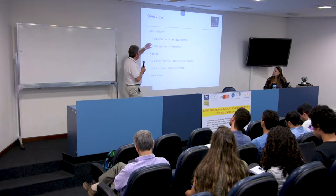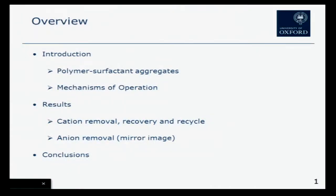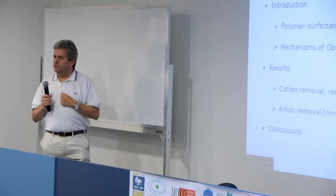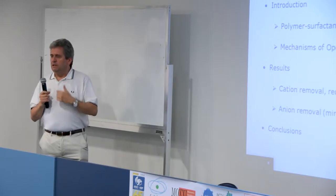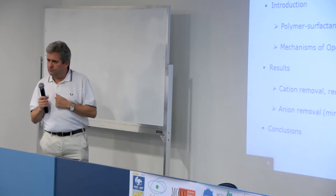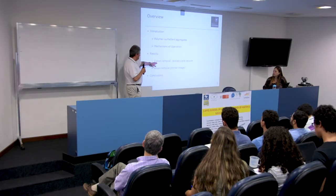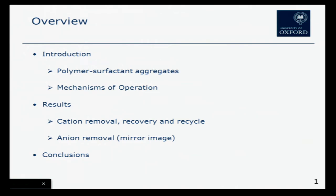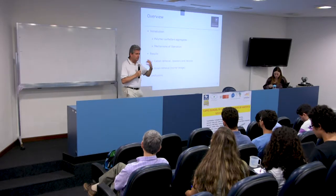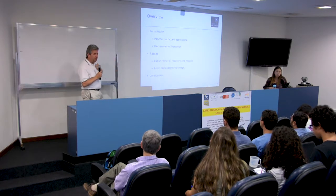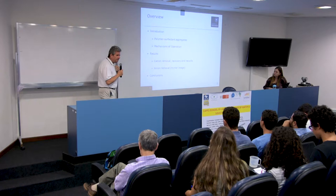I'm going to introduce what polymer surfactant aggregates are and explain how this process works. It's an adsorption-flocculation type process, typical for wastewater or potable water treatment. I'll show results where we've tried to remove cations — metallic ions like zinc — and we can not only remove them, but also recover and recycle both the waste material and the agent of removal, which is the polymer and surfactant itself.